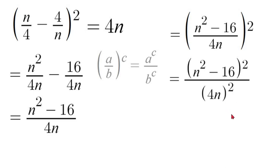Now in order to simplify this one step further we can solve for this (4n)² on the bottom which would leave us with 16n².